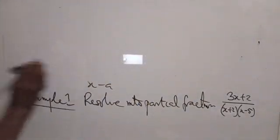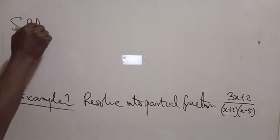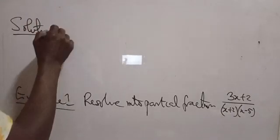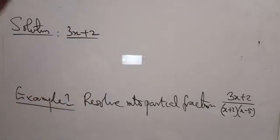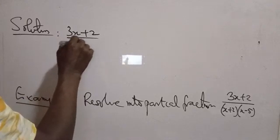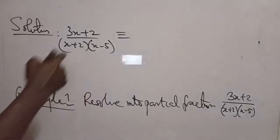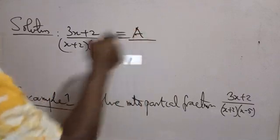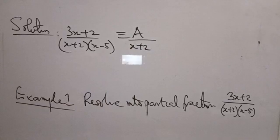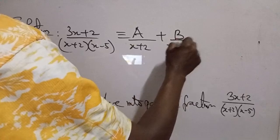Don't forget, we have two linear factors in the denominator. Solution: we have 3X plus 2 all over (X plus 2)(X minus 5). Correspondingly, since we have two linear factors, we are introducing two constants. So we have A all over X plus 2 plus B all over X minus 5.